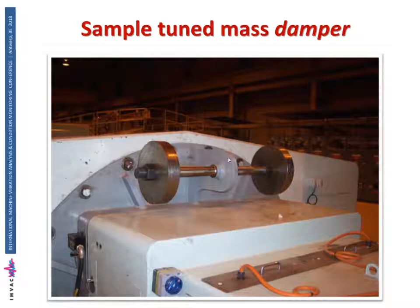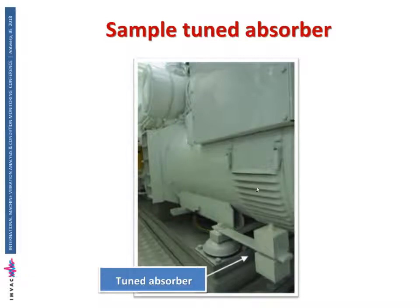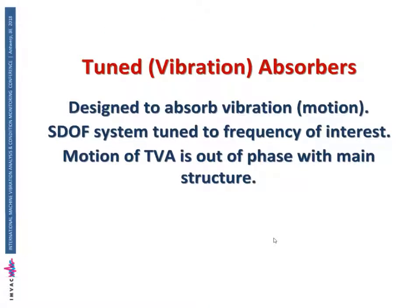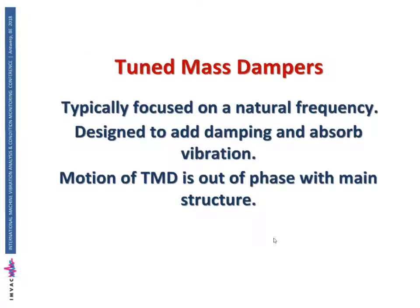Here's an example of one added to a generator to stop some vibration, and here's another on a ship — this little tuned absorber vibrates up and down. Technically, a tuned absorber (sometimes called a dynamic absorber or tuned vibration absorber) is designed to absorb vibration that is not from resonance. It's a single degree of freedom system we attach to a machine and tune it, for example, to the running speed of the machine.